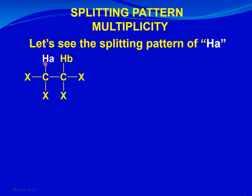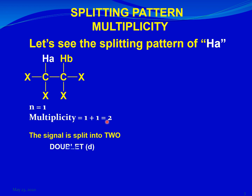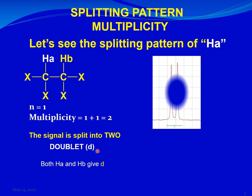We are talking about the splitting pattern of HA placed in a situation where it is in the neighborhood of only one magnetically inequivalent hydrogen. So if n is equal to 1, then according to the n plus one rule, 1 plus 1 equals 2 — the signal is split into 2, which is known as a doublet. This doublet appears more or less like this — a picture taken from a real NMR spectrum in which this signal appears as a doublet.